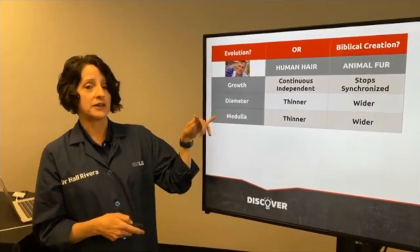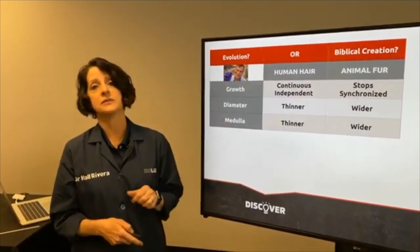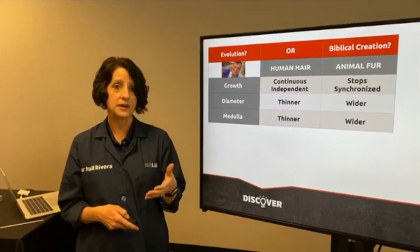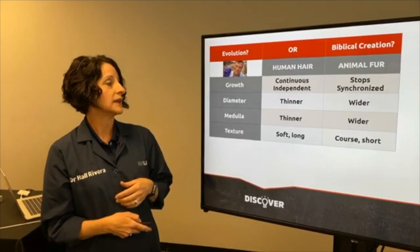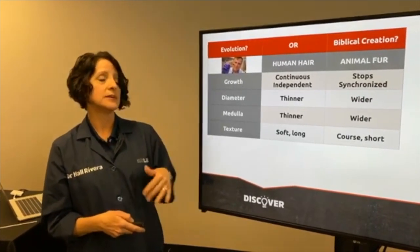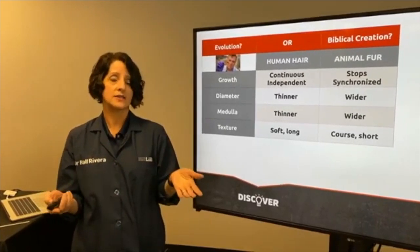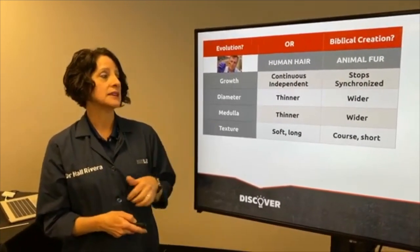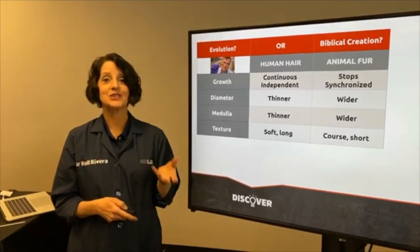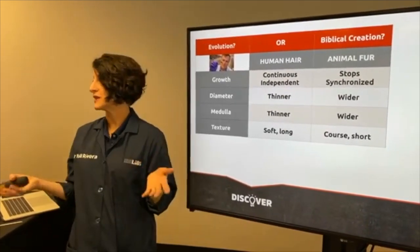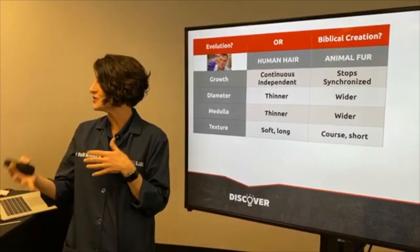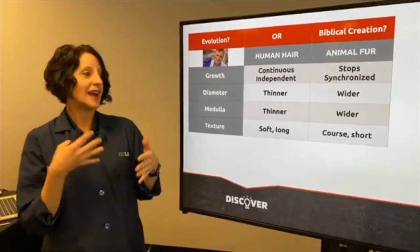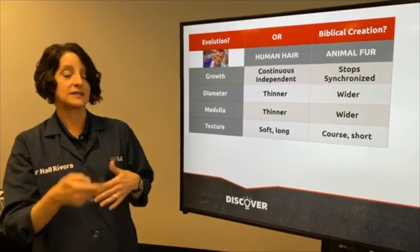And as far as our texture in humans, on average, our hair is soft and has the potential to grow very long. But in animals, it is coarse and often very short. Now, there are rare exceptions because we have purposely crossed certain traits, especially of dogs, to have long hair. But that is not how they would normally exist in nature.